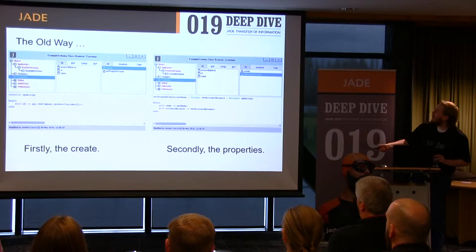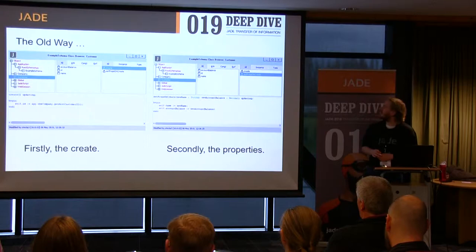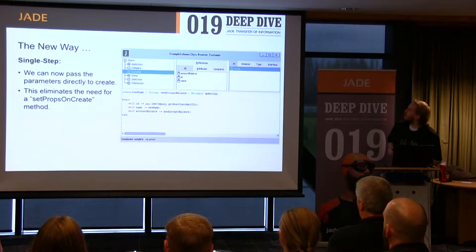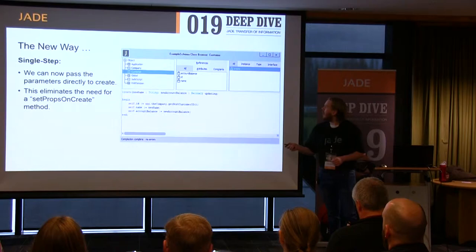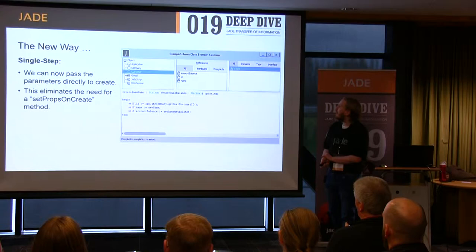Previously, that's how you'd do it the old way — you would first create the object with a create method, then you'd have the set properties on create method. You'd have to do those two steps every time you're creating an object. What we're trying to do is shrink that down to one step. So this is what it looks like in J 2018: we can do a single step object instantiation — we can pass some parameters straight into create, and that way you can set the initial properties of the object. You won't need any sort of set properties on create method.